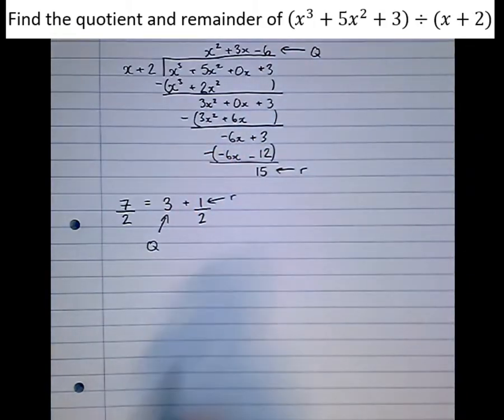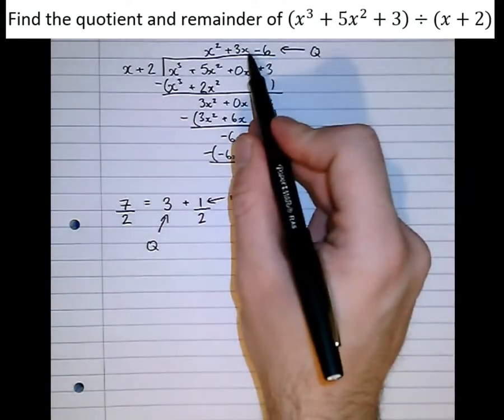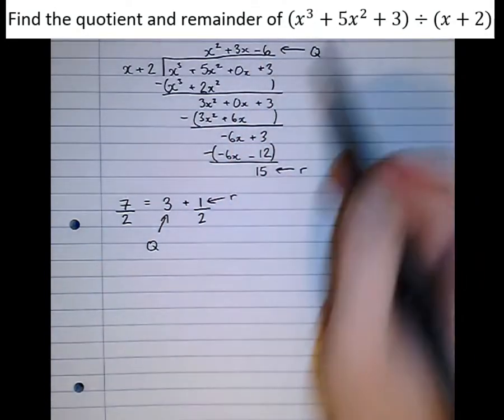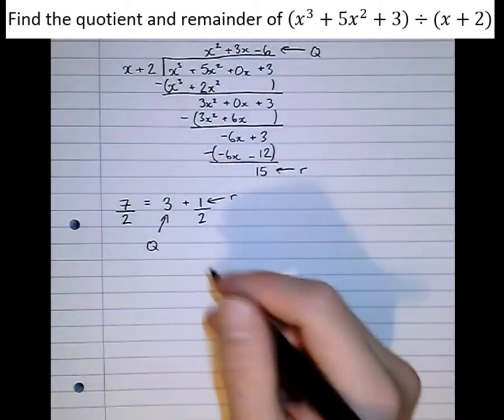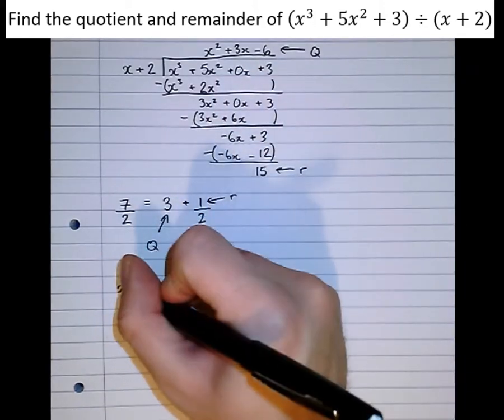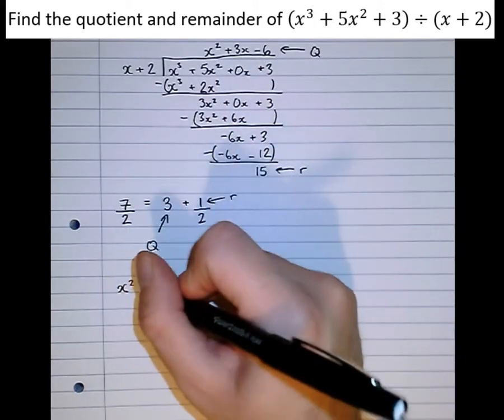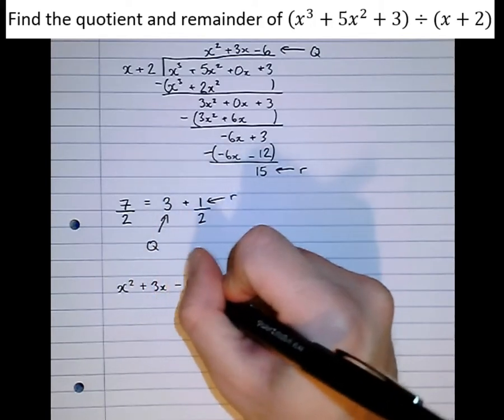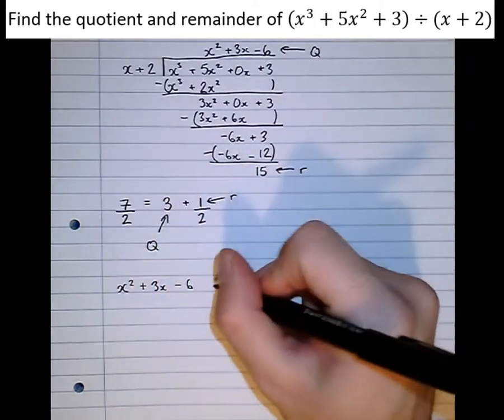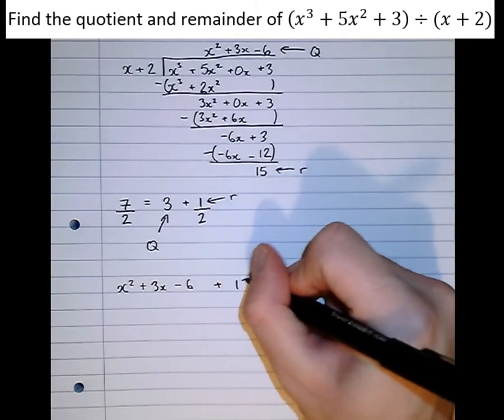And after we've found the remainder, we know we have to divide by 2, because the sum was divided by 2. So likewise here, we've found the quotient and the remainder. We've fulfilled what the question asked for. However, if we were to write the actual answer to this division, it would be just like we did before. For the numbers, the quotient x squared plus 3x minus 6. That's the whole number part of the answer. Then we've got the remainder, which is 15.